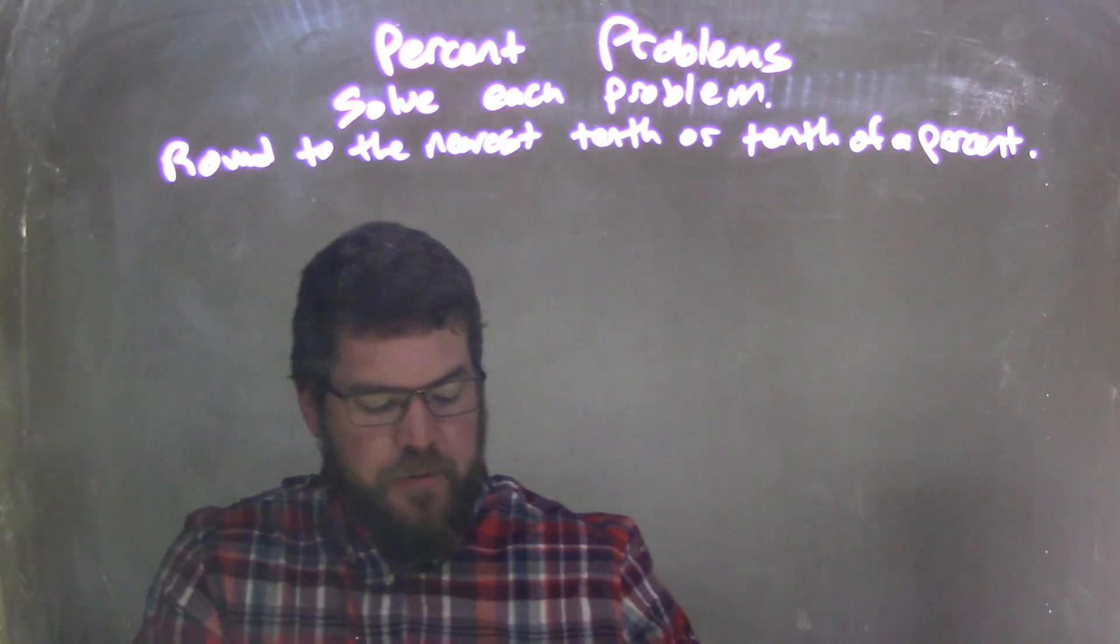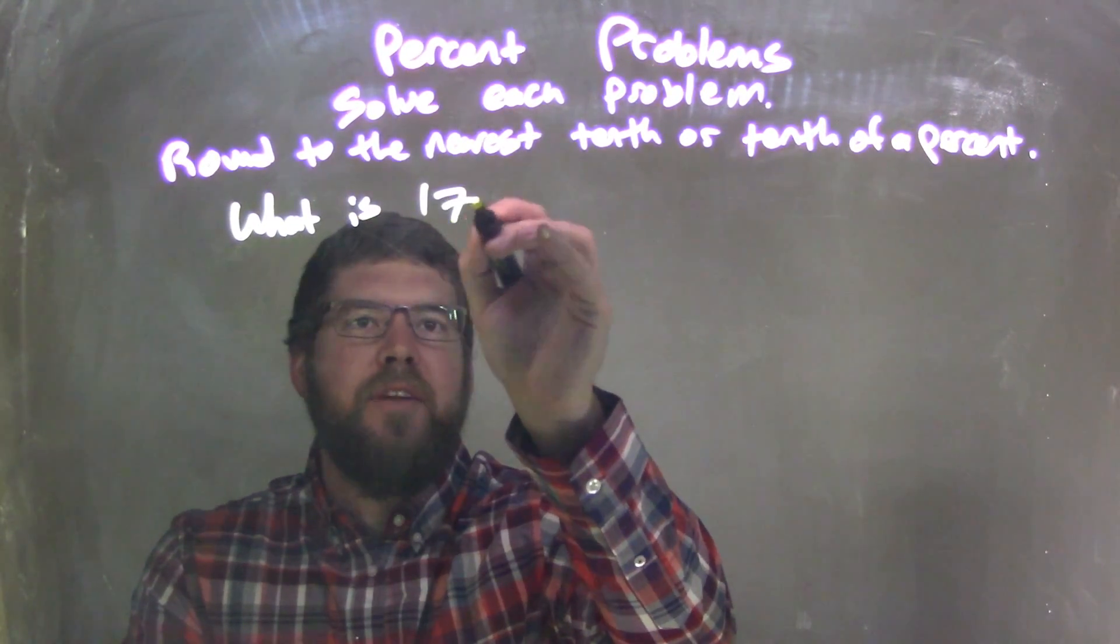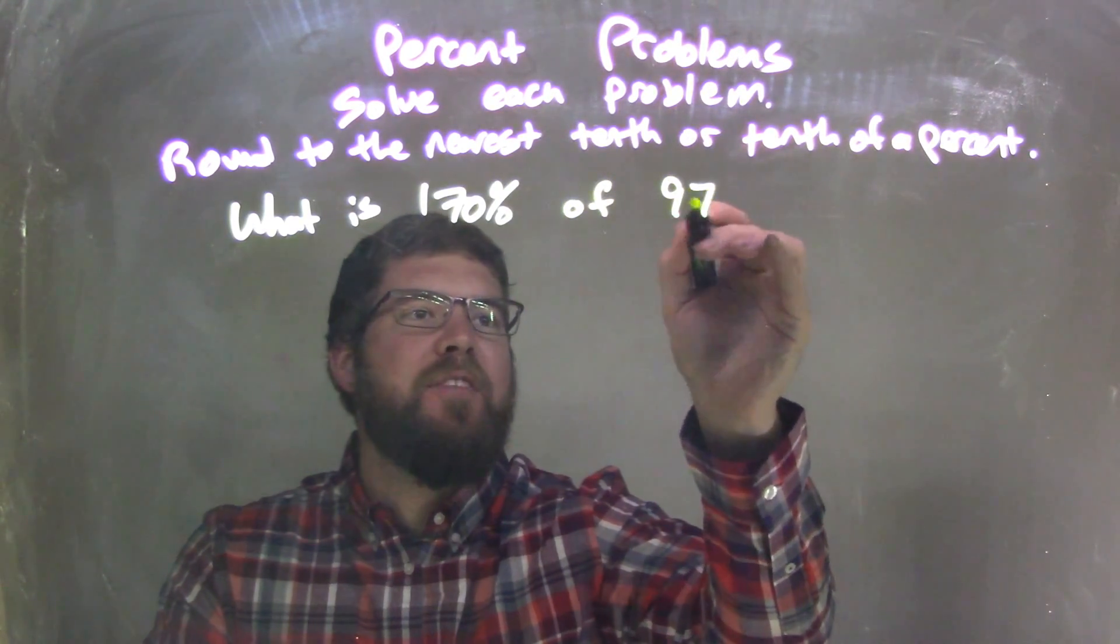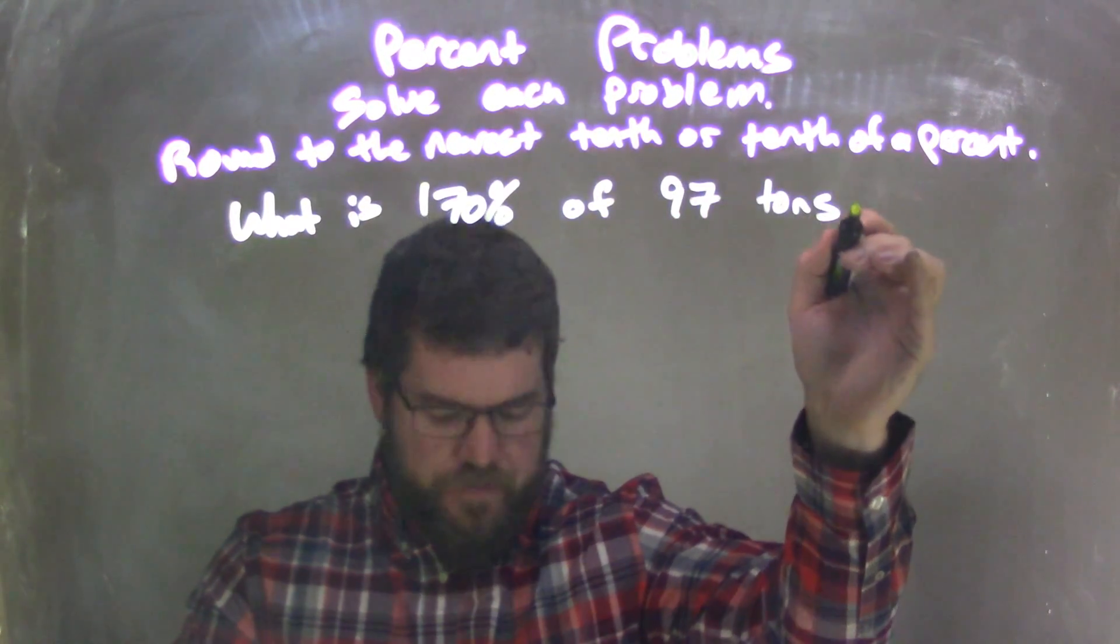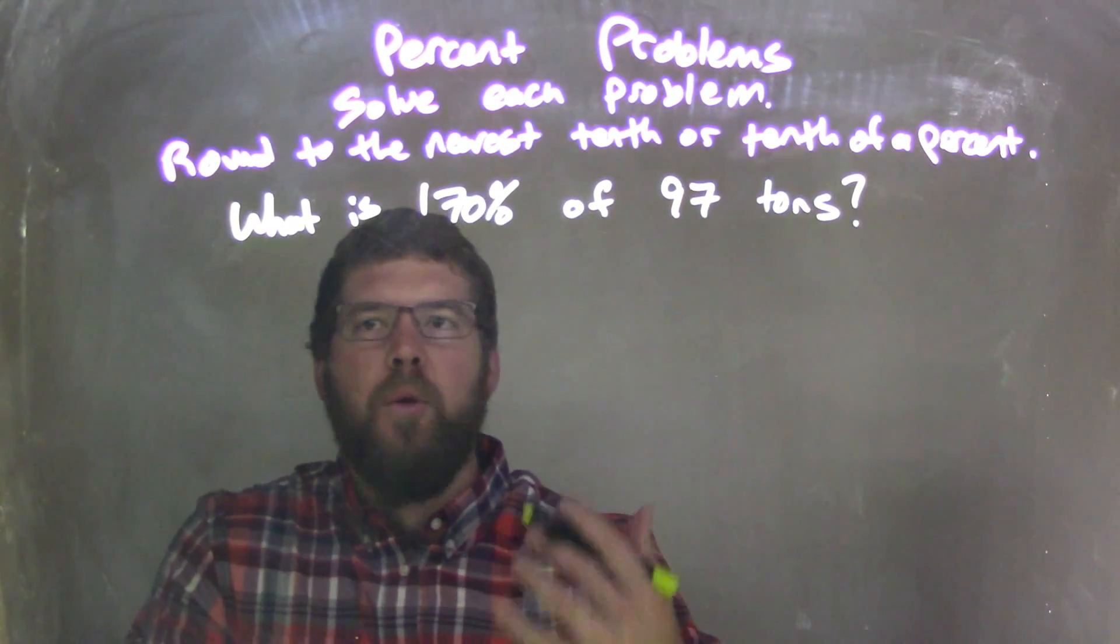So if I was given this problem: what is 170% of 97 tons? Okay.